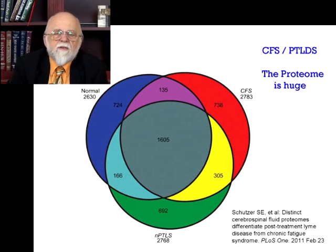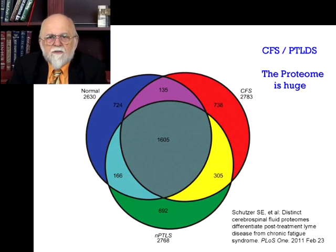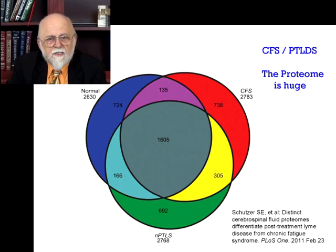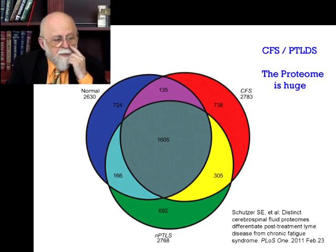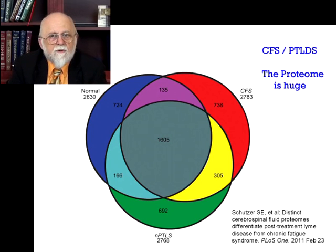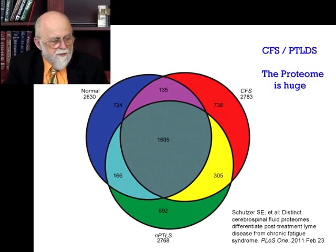Here is another proteome study of chronic fatigue syndrome versus post-treatment Lyme disease syndrome and normals. Once again you see large variation between the two diagnoses: 738 unique proteins in CFS, 692 in Lyme, and about 724 in normals — a huge number of changes within the CSF.